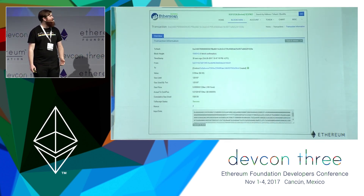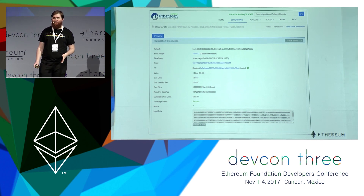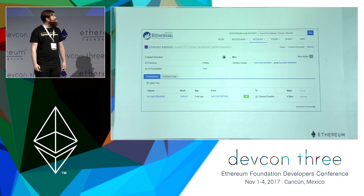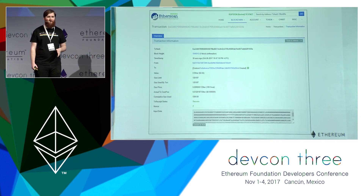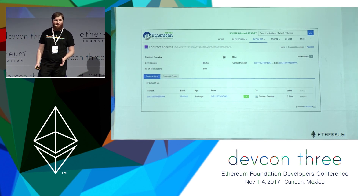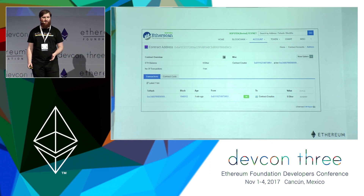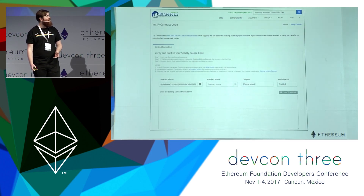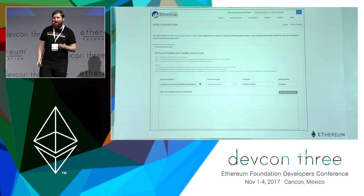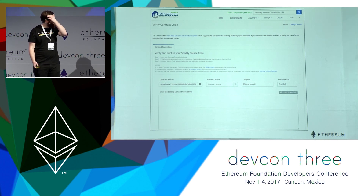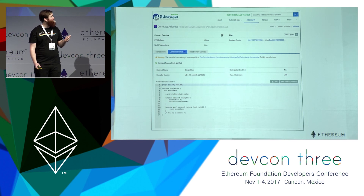Etherscan shows that the contract has been created — it gives the input data, how much the gas fee was, and other details. Now we navigate to the contract itself, separate from the transaction that created it. Etherscan provides additional tools: you can see transactions between the contract and users or other contracts, check if there's ether in the contract, see who created it, and even publish the contract code so other people can look it up and read it. It's a really powerful tool widely used for transparency purposes.